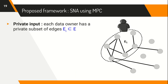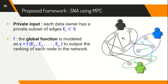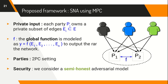The private input here would be the subset of edges that each data owner is aware of. The set of all nodes in the graph is assumed to be public — it is the presence or absence of an edge that is regarded as private data. The global function f that the data owners are interested to learn is modeled to output the rank of the nodes in the network. We consider a two-party setting where each data owner distributes shares of their private data to two computing parties p1 and p2, such that each individual share does not leak any information. The two parties evaluate f securely and the output is communicated back to the data owners. We assume the two parties do not collude and therefore we deal with the semi-honest adversarial model only.